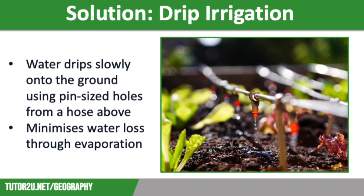There are also some much smaller scale solutions that can be used. One example is drip irrigation, where water drips slowly onto the ground from pin-size holes in a hose lying on top of the soil. This minimises water loss through evaporation, making it really effective in places where temperatures are high. It also uses simple technology, so it's cheap and easy to maintain — a good example of appropriate technology.